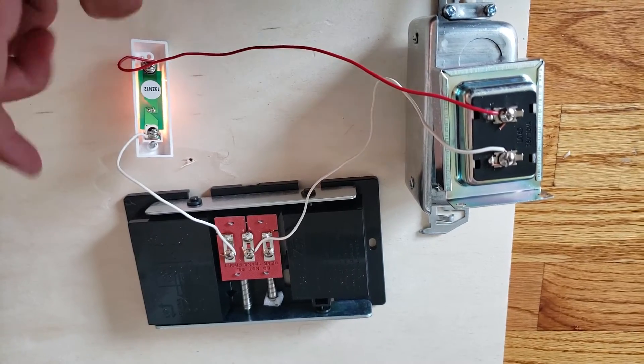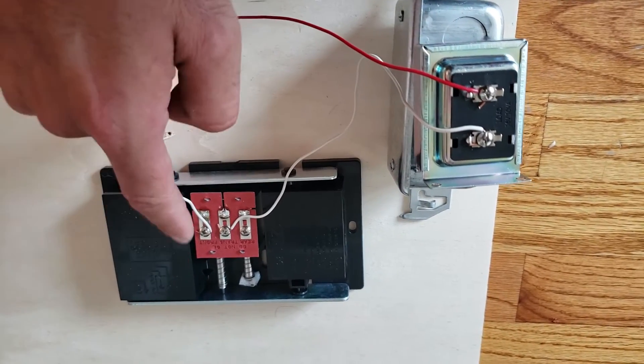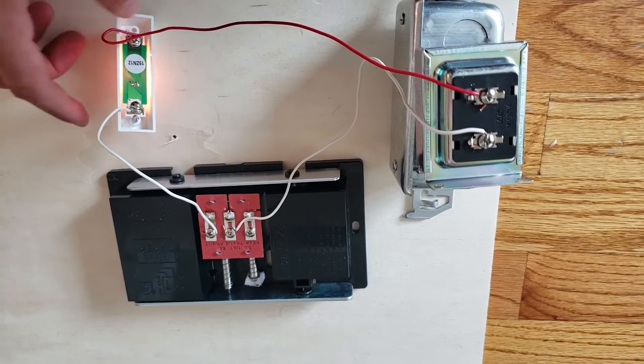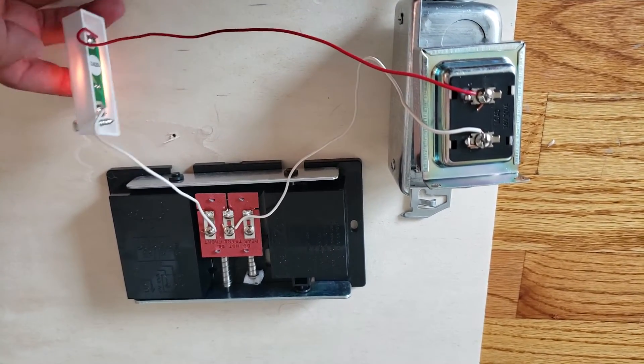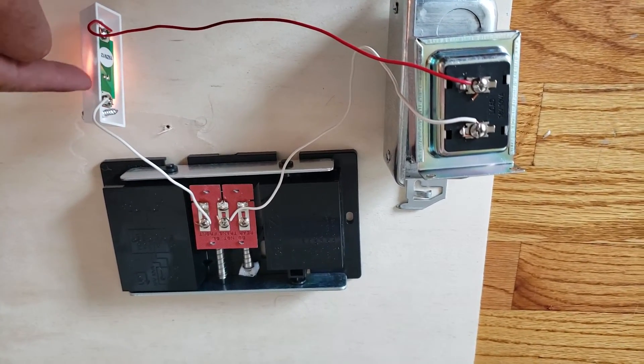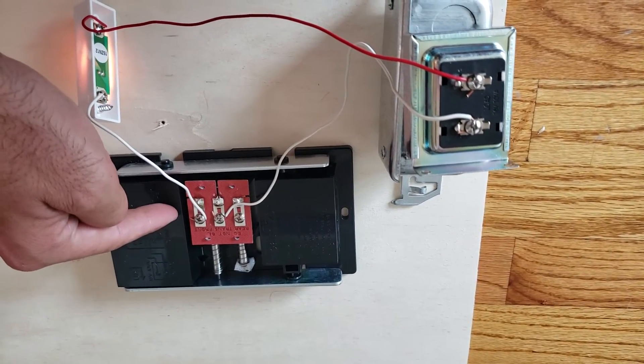So you've got a transformer, doorbell chime, doorbell. And if we were to start at the doorbell, you've got one wire going directly to the transformer. The other wire goes from the doorbell to the front terminal on the doorbell chime.